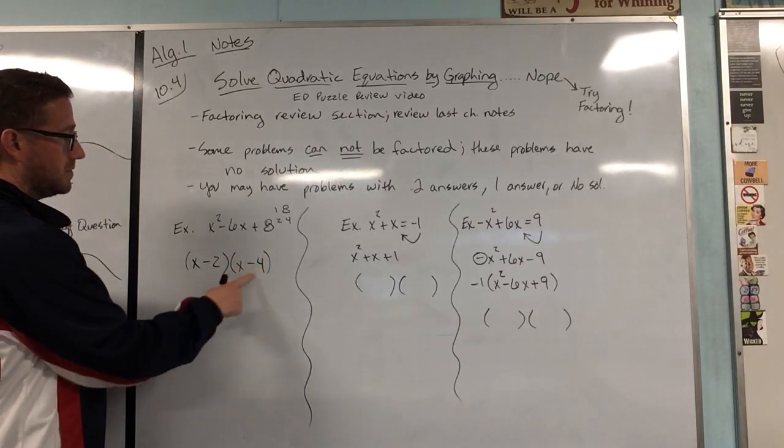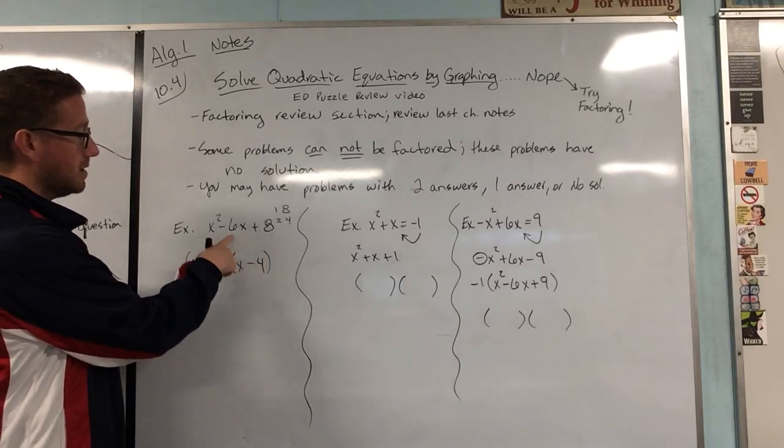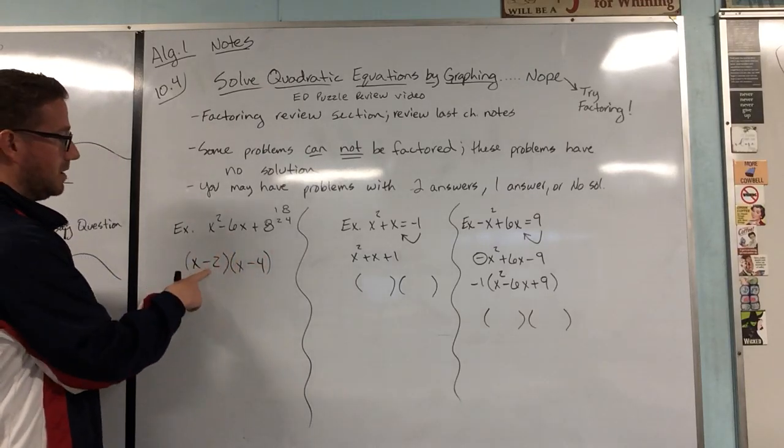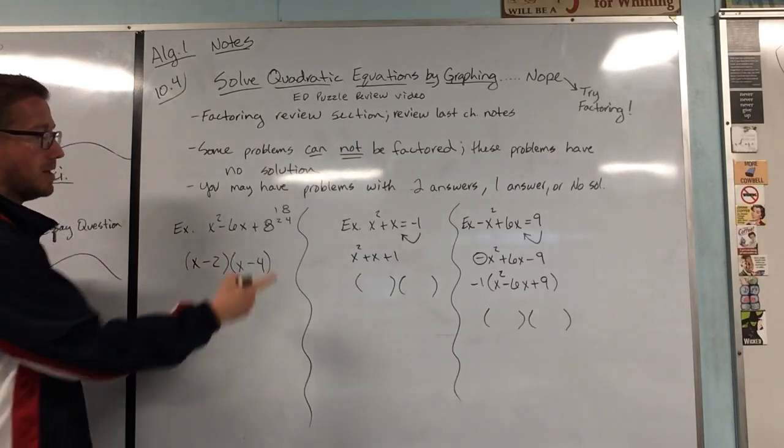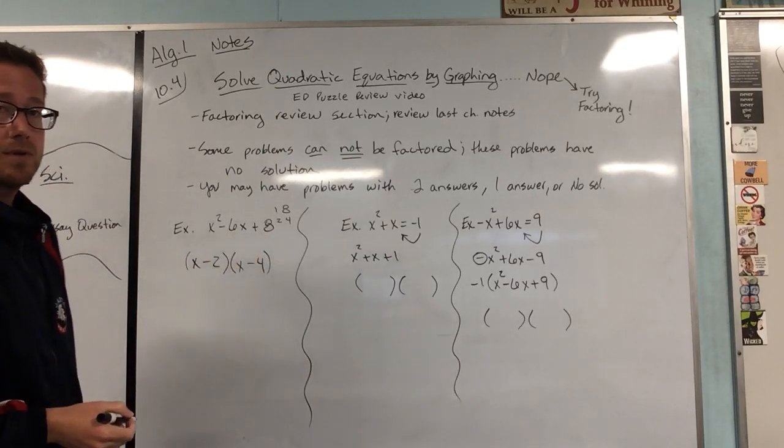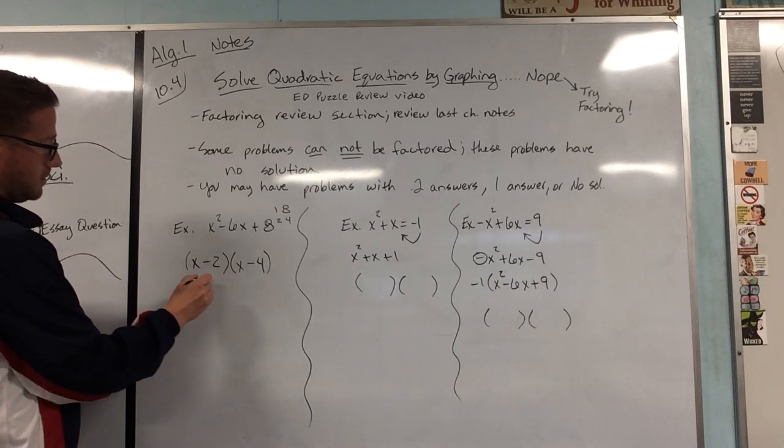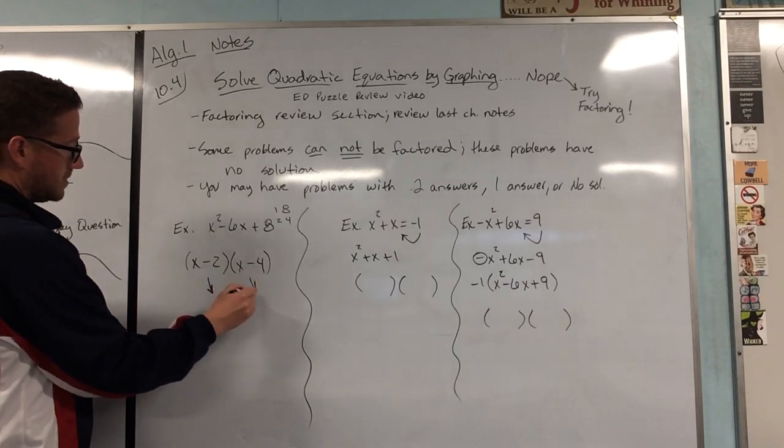So if you had 1 and 8, that doesn't work. If you had 2 and 4, that does work. So it's going to be 2 and it's going to be 4, because a negative 2 and a negative 4 when you add them make a negative 6, but a negative 2 and a negative 4 when you multiply them make a positive 8. So we know that that does work. Then what we're going to do is from here we're going to set them both equal to 0: x minus 2 equals 0, x minus 4 equals 0.